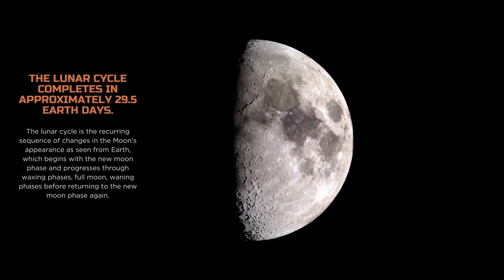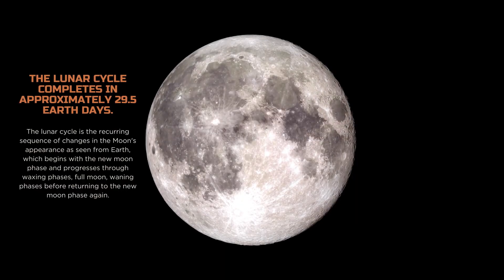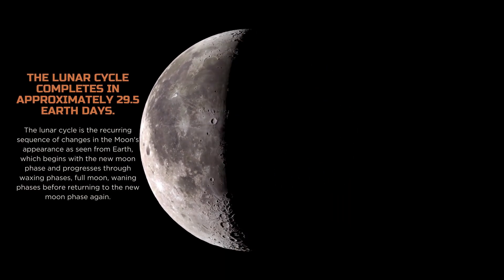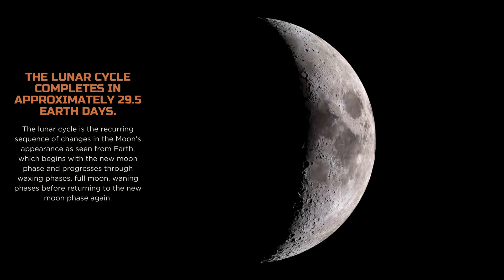The lunar cycle completes in approximately 29 and a half Earth days. It's the recurring sequence of changes in the Moon's appearance as seen from Earth.